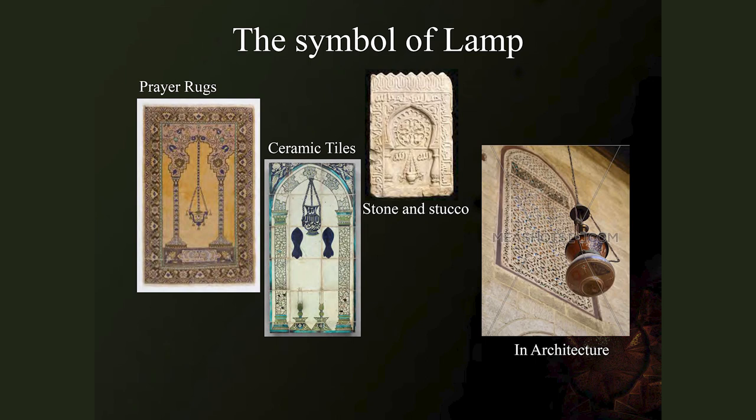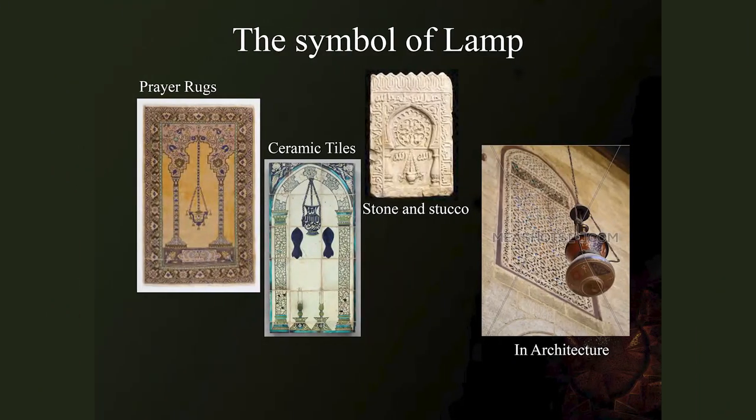There is also the symbol of the lamp. The lamp is a beacon of light, and we should be training ourselves to be such a light. The oil in the lamp is your lifespan, and while you are living your life should be like a beacon of light and light the path of others. We find this in prayer rugs, in tiles, in stucco, in mosques, but it has a subtle meaning. This symbol of the lamp is also common in Buddhism and Christianity.